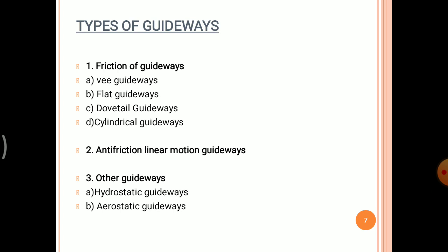There are four types of friction guideways: V-guideways, flat guideways, dowel guideways, and cylindrical guideways. The other guideways are divided into hydrostatic guideways and aerostatic guideways.